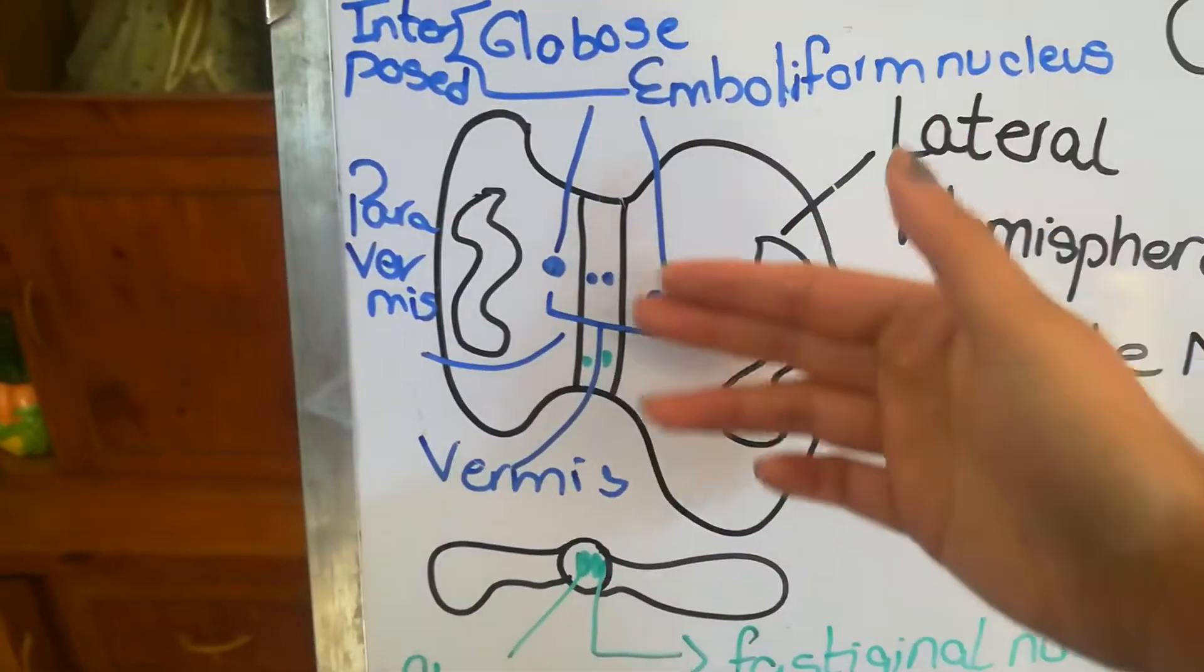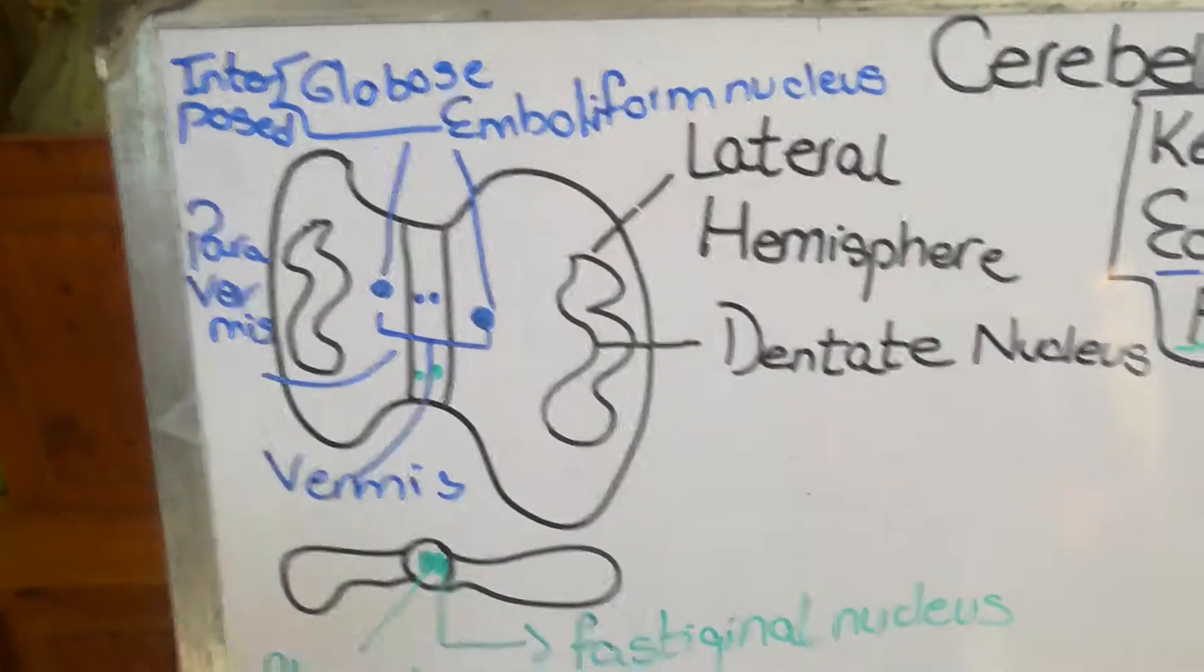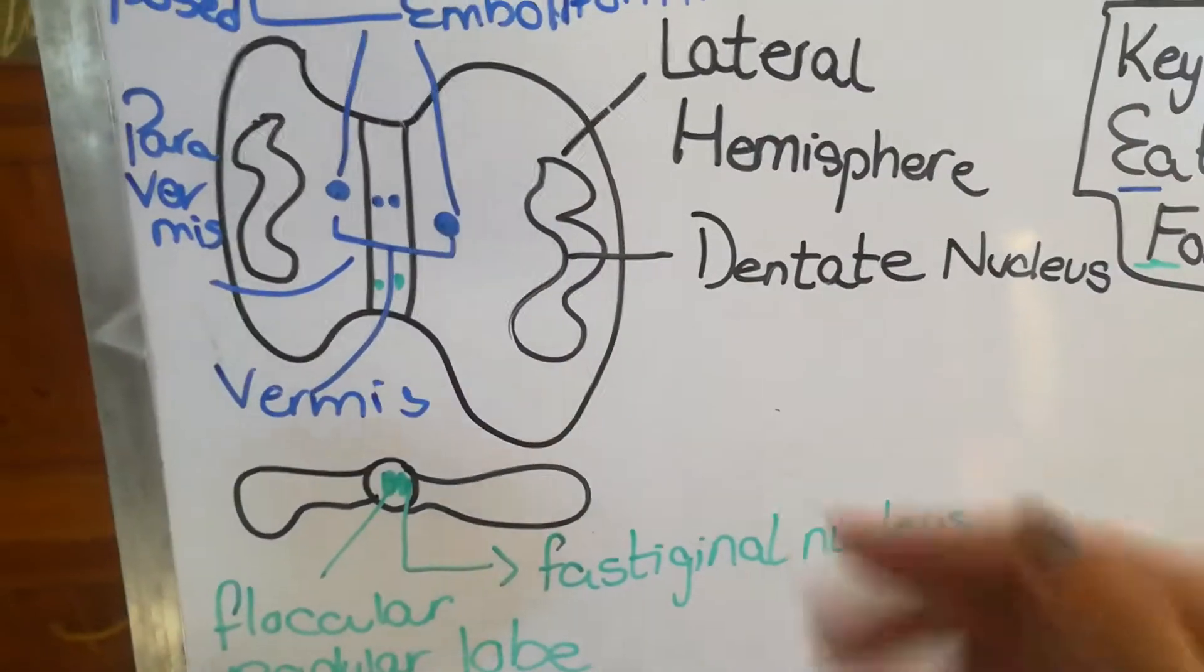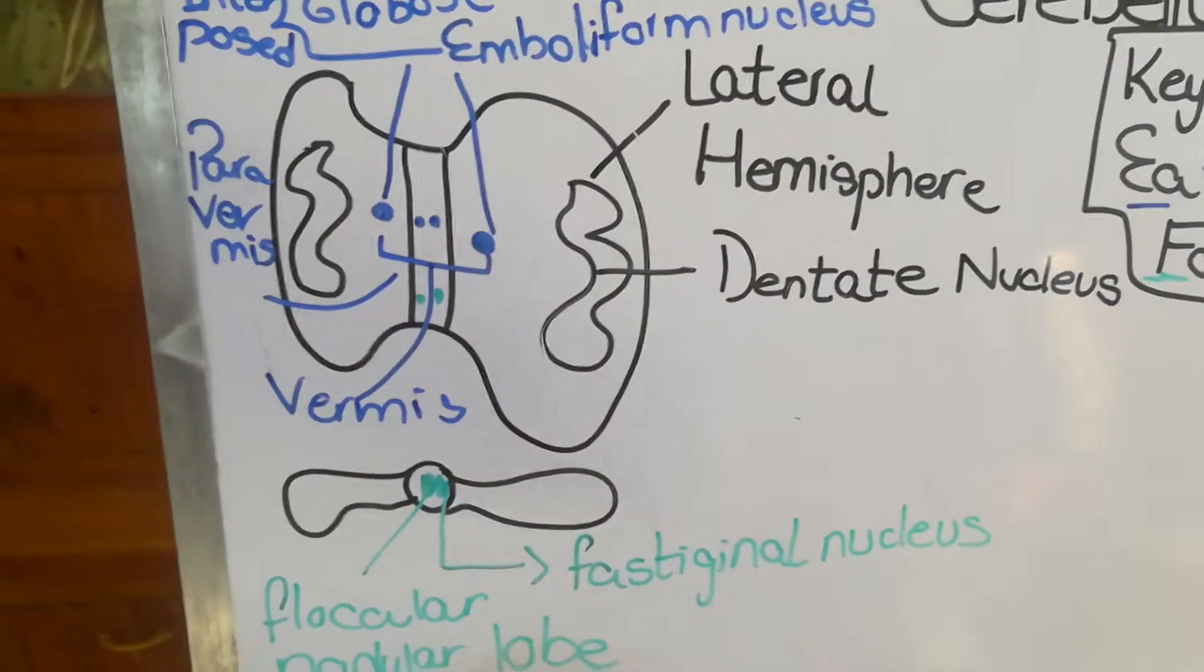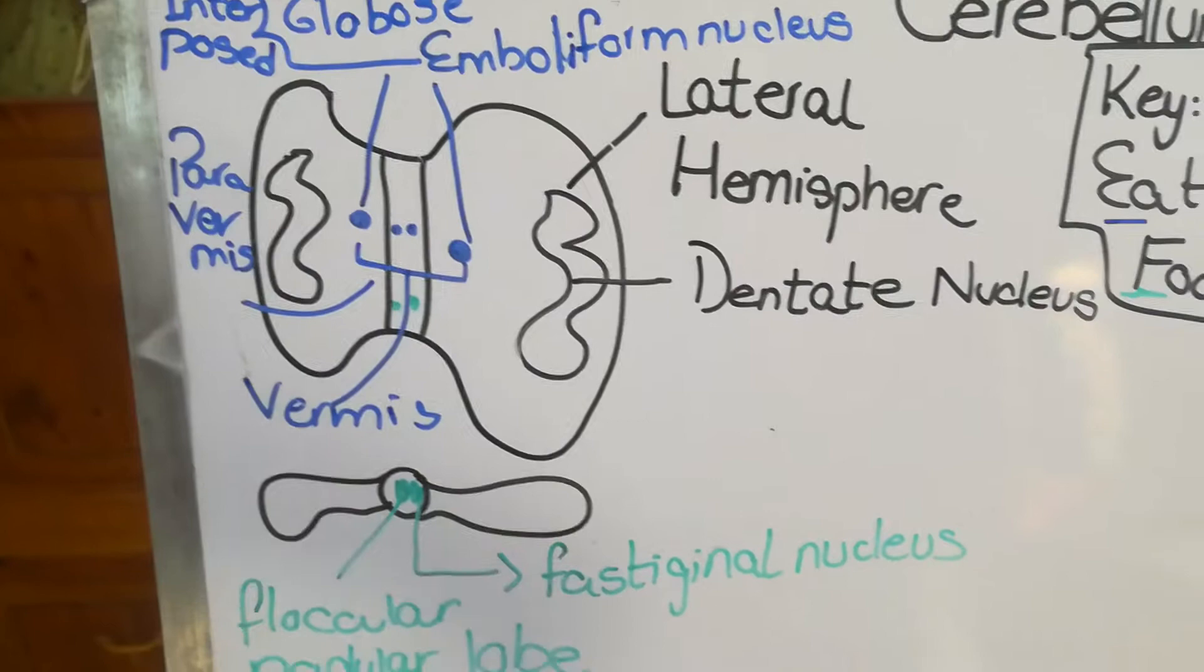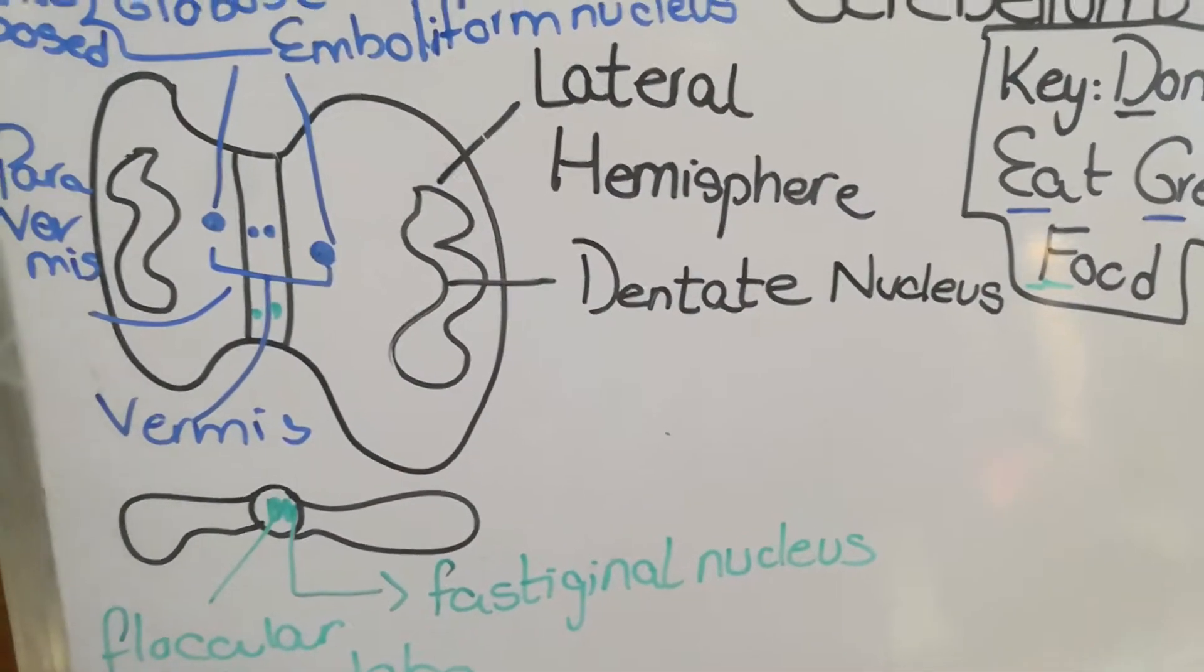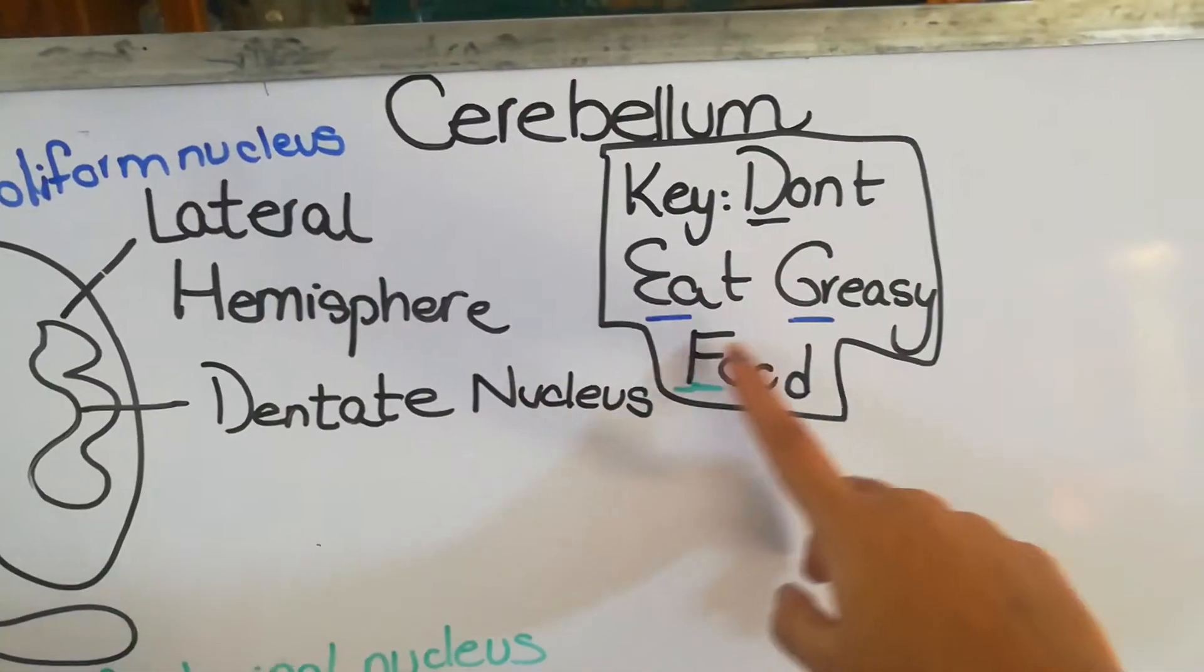There are different neurons present in these different parts of the cerebellum which play an important role in the various pathways associated with the cerebellum. Before going into them, let's learn the names first. To memorize the names, we'll use a mnemonic or keyword.